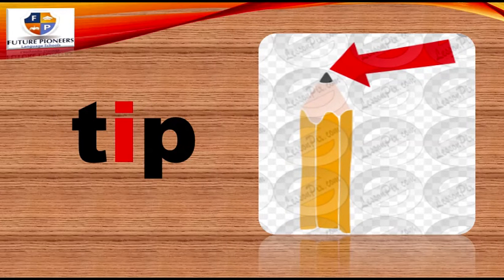Look here. Look at this part of this pencil. We want to know the name of this part. Let's read the word: T, short I, p — tip. Tip. So we're going to say for this part, the top part is tip.